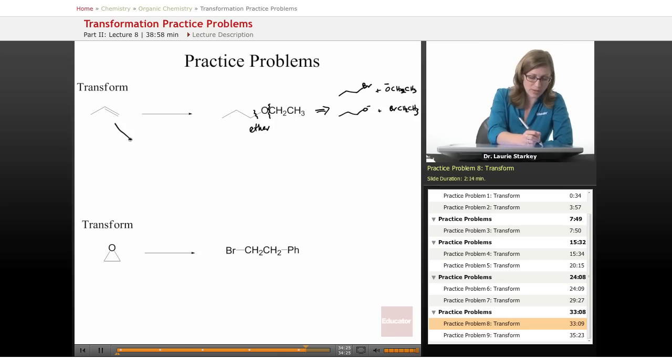So we could either do that with the bromine by doing HBr and peroxides. And then we can treat this with sodium ethoxide to do our SN2. So that would be a simple way to do it.